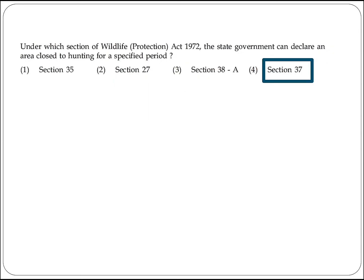The next question asks under which section of the Wildlife Protection Act 1972 the state government can declare an area closed to hunting for a specified period. The answer is Section 37. Option 4 is the right answer.